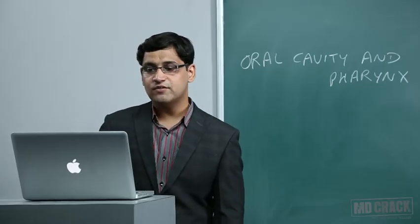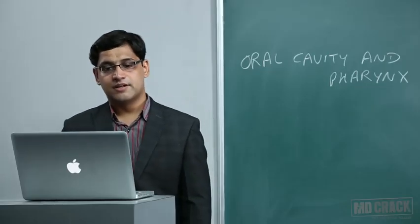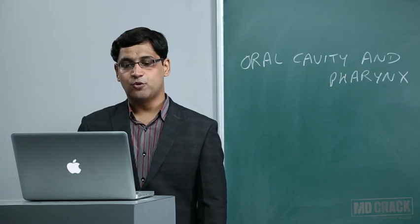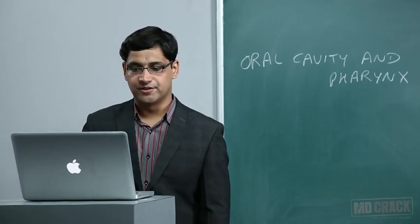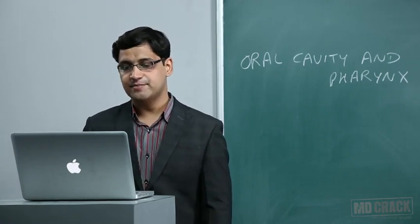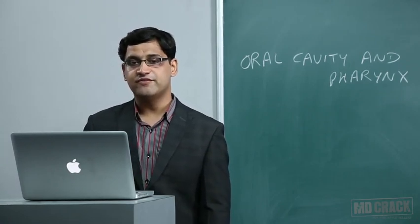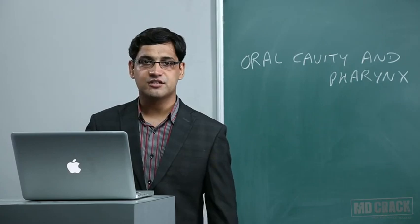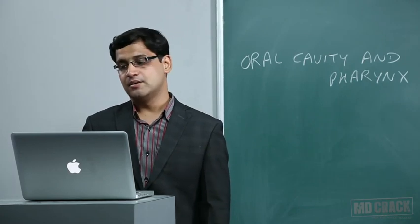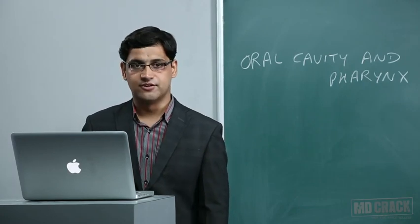The second subsite of the hypopharynx is the post-cricoid region. This is an MCQ site — it is the site for carcinoma in females, as seen in Plummer-Vinson syndrome.